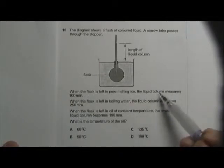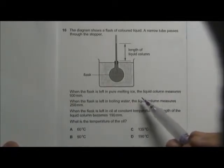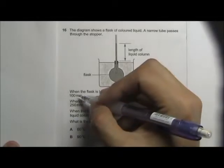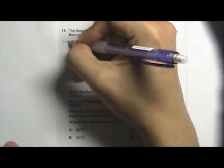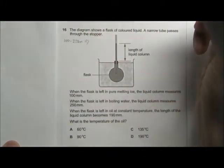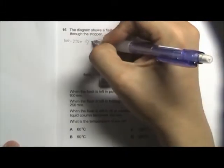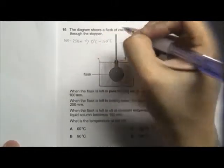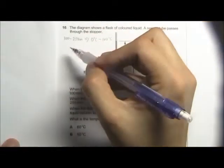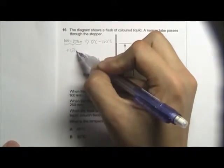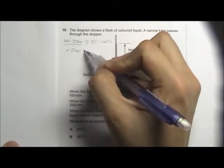The relationship between the liquid column and the temperature of the thermometer: when the liquid column increases from 100 mm to 250 mm, it corresponds to a change in temperature of 0 degrees Celsius to 100 degrees Celsius. So an increase of 150 mm in the liquid column brings about 100 degrees Celsius change in temperature.